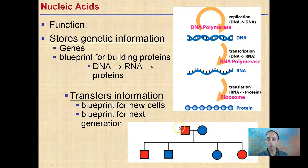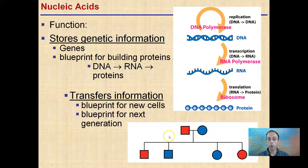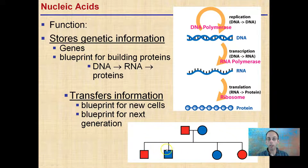We see here two parents passing down to offspring, and the nucleic acids will allow that to be the blueprint for the next generation. We see certain traits, certain genes being passed on from the parents to the offspring.